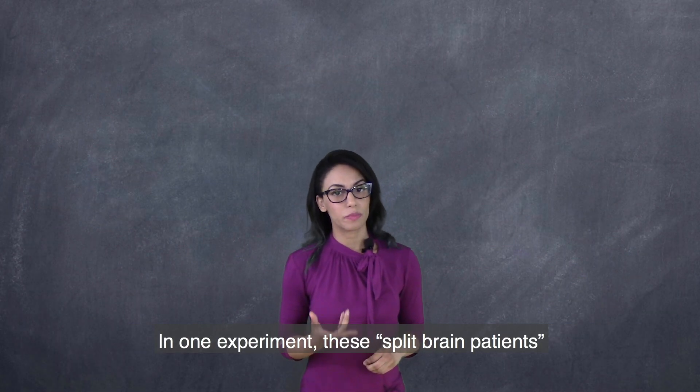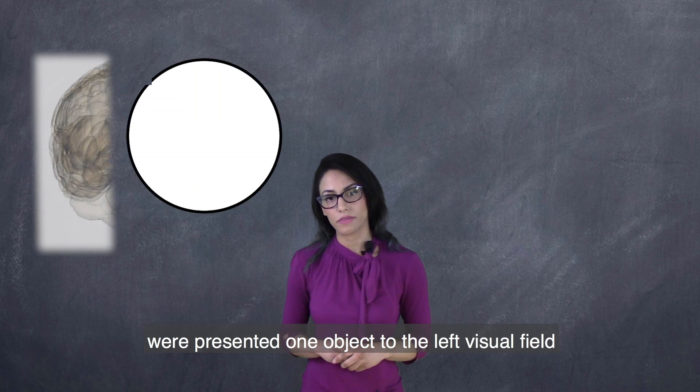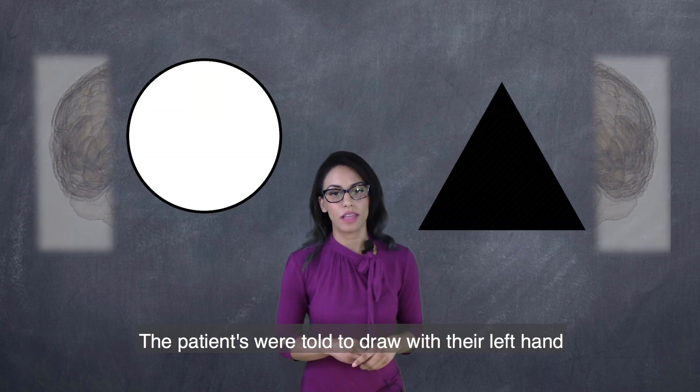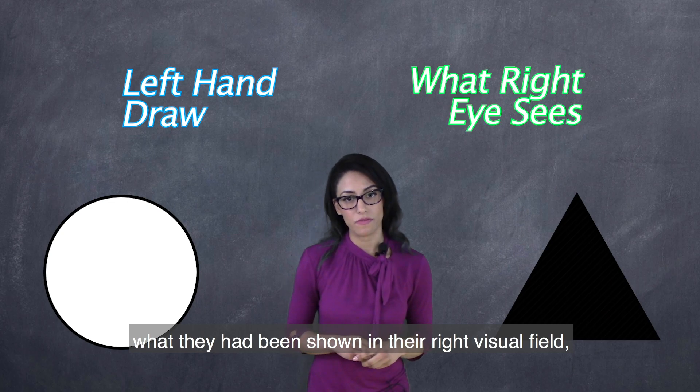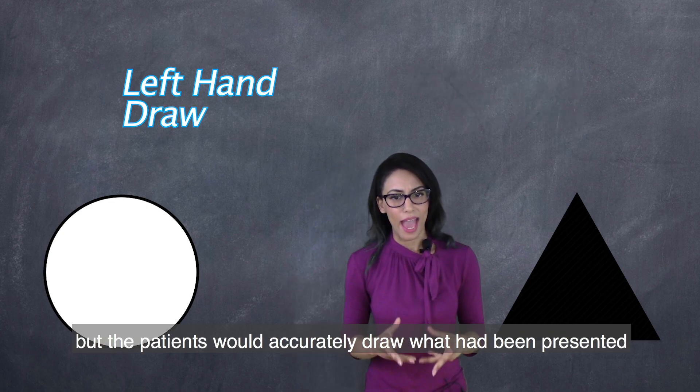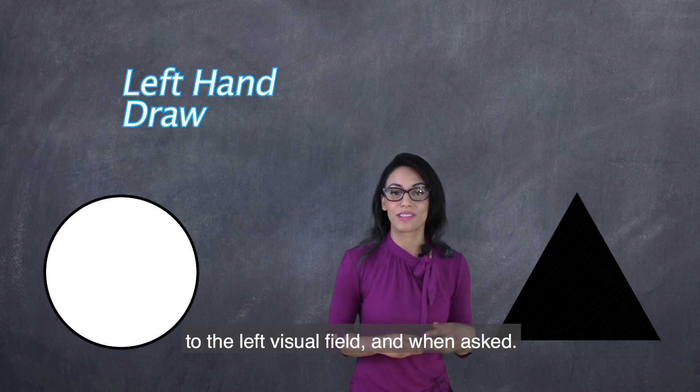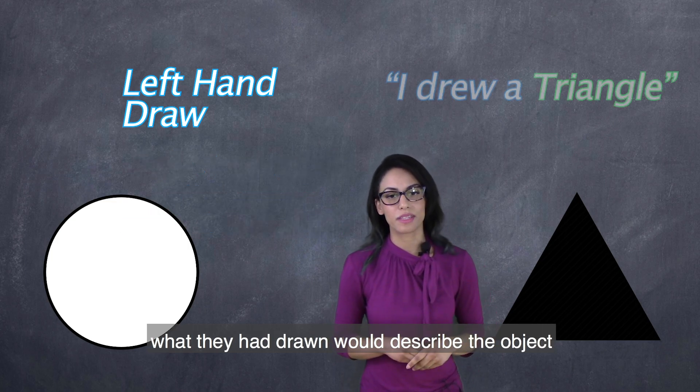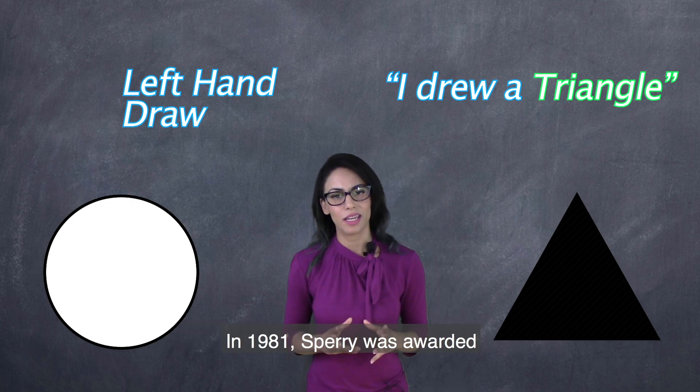In one experiment, these split-brain patients were presented one object to the left visual field and another object to the right visual field. The patients were told to draw with their left hand what they had been shown in their right visual field. But the patients would accurately draw what had been presented to their left visual field, and when asked what they had drawn, would describe the object that had been presented to their right visual field.